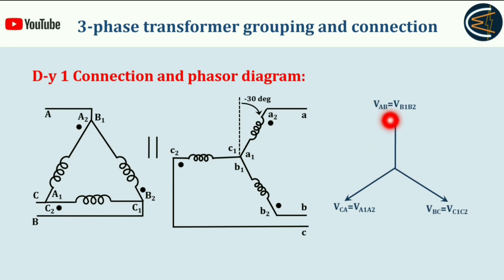phase voltages will be the same. As you can see from here, V capital AB is the line voltage. Now we need to prove that V small ab will be lagging with respect to V capital AB